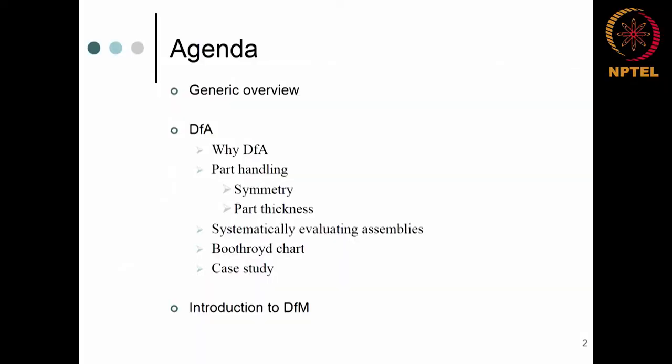The agenda for today is we will start talking about design for assembly. This is going to be the outline of the next couple of lectures. First, I will give you a generic overview on what design for assembly is and why it is required. We will talk about part handling, since an assembly means two parts coming together. Then we will discuss how to systematically evaluate assemblies using the Boothroyd-Dewhurst approach, and we will also look at a couple of case studies.